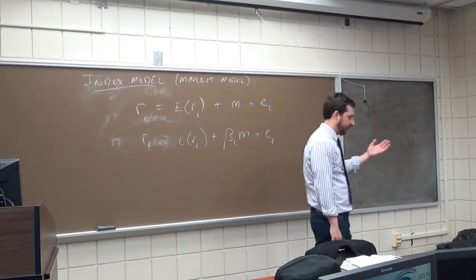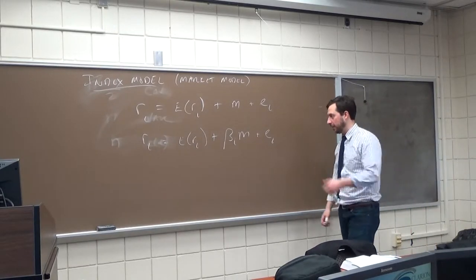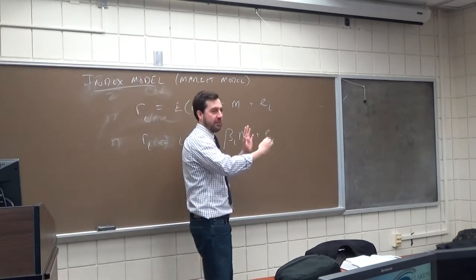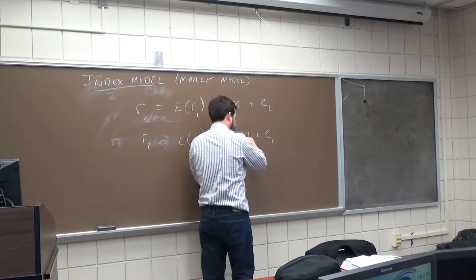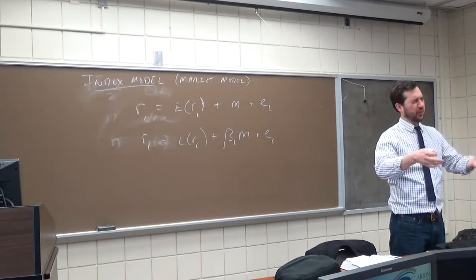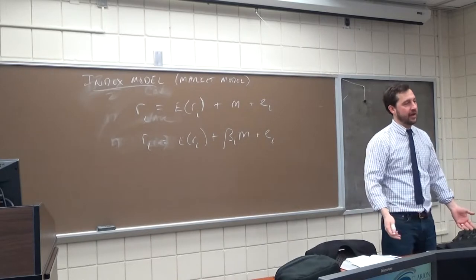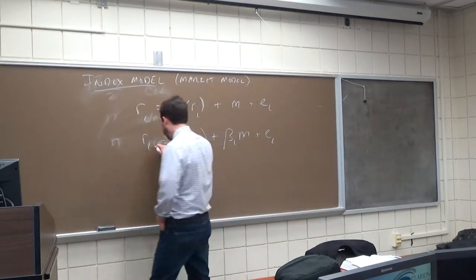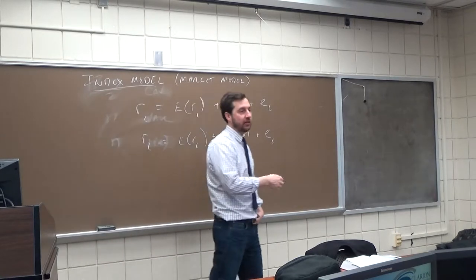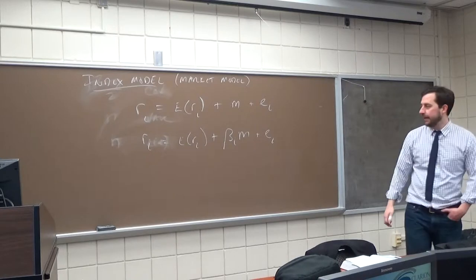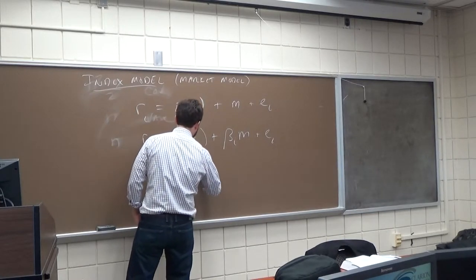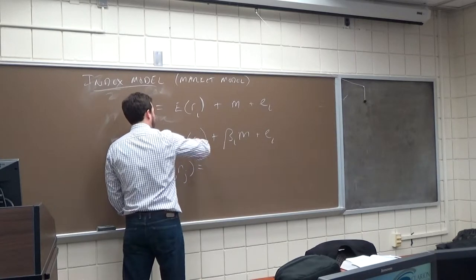Once we have this decomposition, we can start looking at how to get covariances. There's no Markowitz theory involved here — all I've said is we can separate stock returns into what we expect, the portion attributable to macro factors, and the portion attributable to firm-specific factors. There's no theory or assumptions beyond that. The one assumption we will make is joint normality — that's the only thing. Once we have this, we can compute the covariance between returns on stock i and stock j.